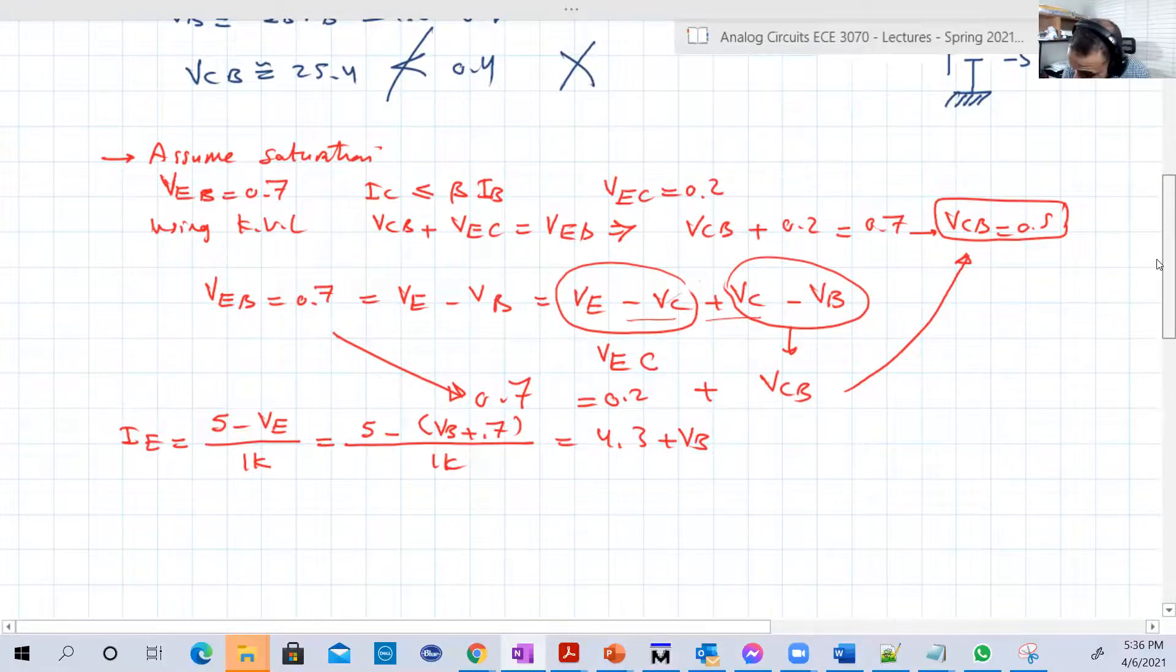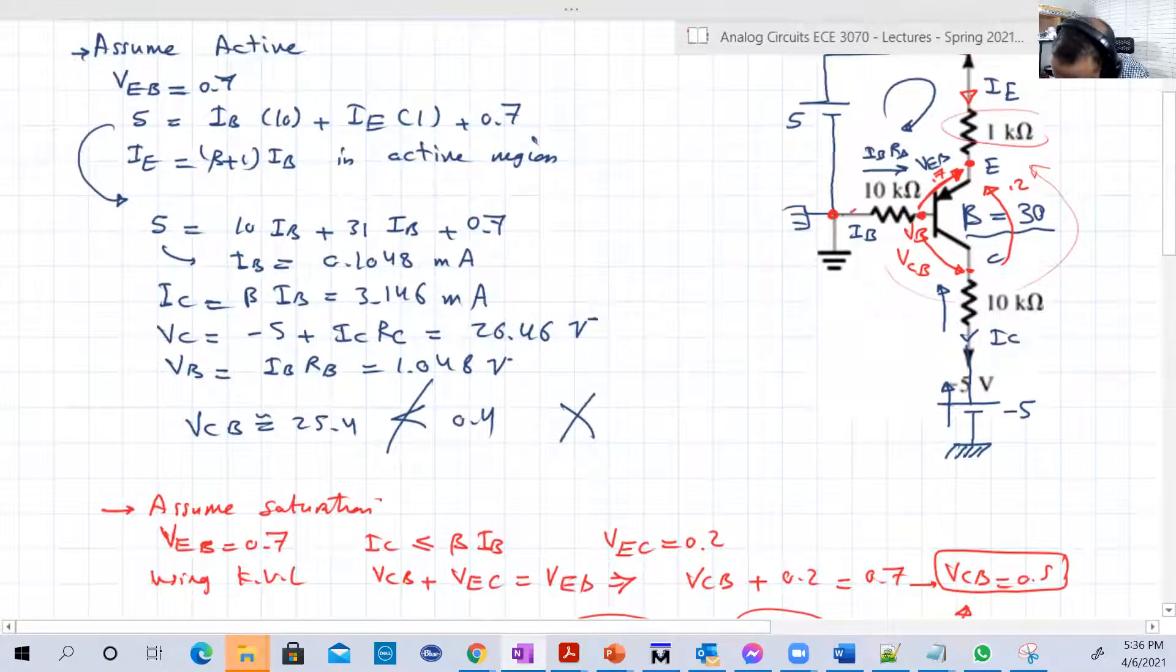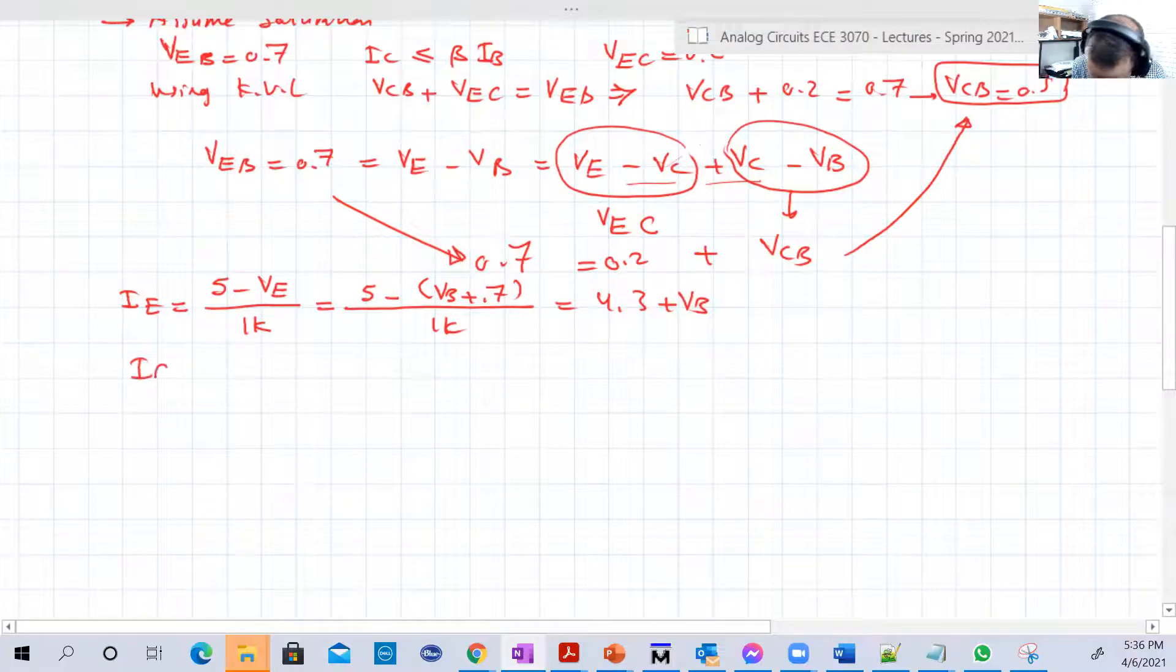So IE equal to 5 minus VE over 1 kilo ohm. But what is VE? Let's check. If VE is the voltage of that point, it can be said it's equal to VB plus 0.7, right? So 5 minus VB plus 0.7, over 1 kilo. So basically, it's 4.3 plus VB. This is one equation in two unknowns, so IE and VB.